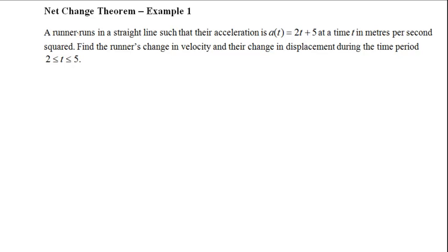This is an example of how to use the net change theorem. The question here is: a runner runs in a straight line such that their acceleration is a(t) equals 2t plus 5 at time t in meters per second squared. Find the runner's change in velocity and their change in displacement during the time period t equals 2 to 5.